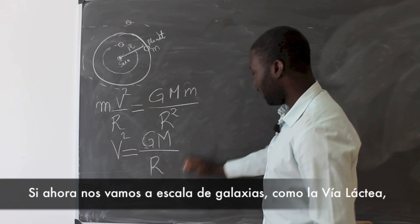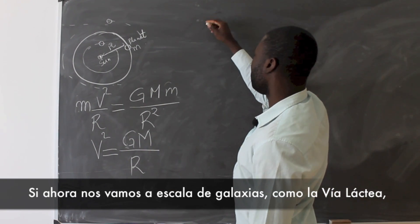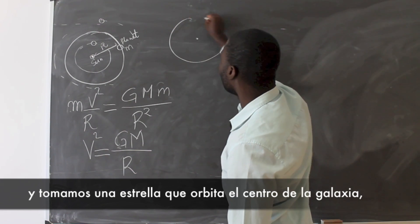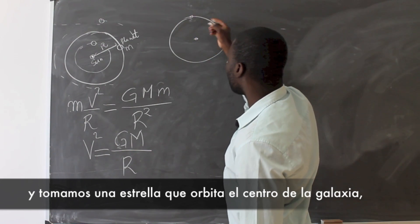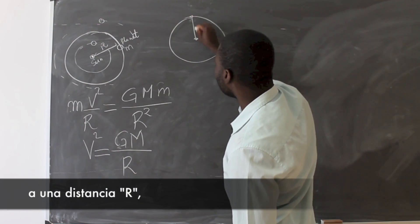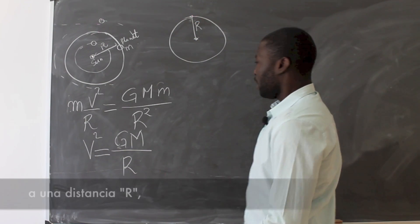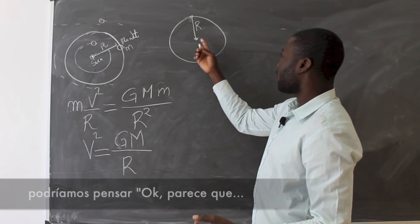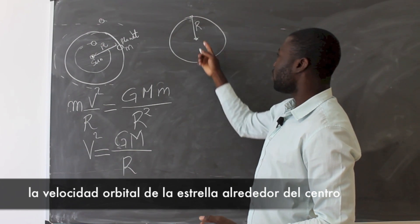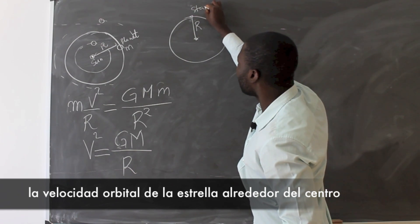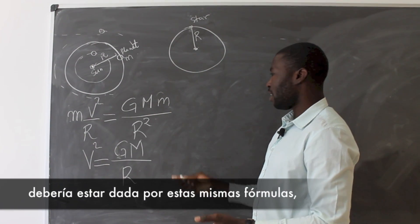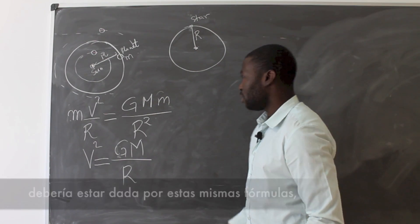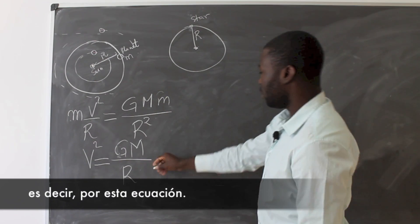Now, if we go in the Milky Way, in a galaxy like the Milky Way, and we take, let me just draw also a star which is orbiting around the center of the galaxy at a distance r. Naively we would expect that the orbital velocity of the star which is orbiting around the center of the galaxy should also follow the same Newtonian law of gravity, which is simply given by this expression.